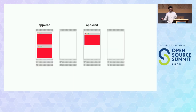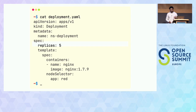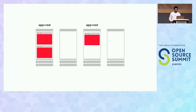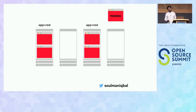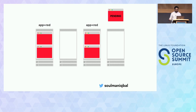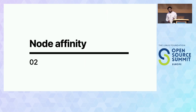If you increase replicas from three to five, the problem is you can only fit one extra pod — there's no space for the fifth one. This is a hard requirement, so the fifth pod will stay pending. You might think that's wasteful since there are two empty nodes. This is where Kubernetes provides node affinity.